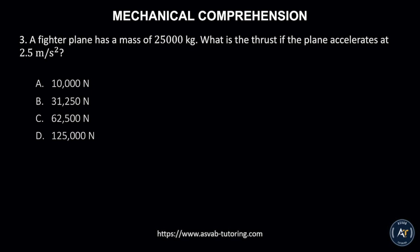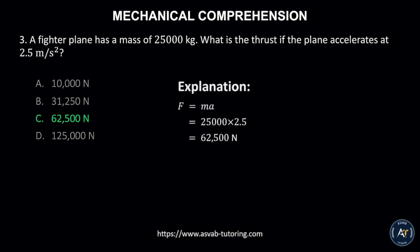Number 3. A fighter plane has a mass of 25,000 kilograms. What is the thrust if the plane accelerates at 2.5 meters per second squared? A. 10,000 newtons, B. 31,250 newtons, C. 62,500 newtons, D. 125,000 newtons. The correct answer is C. 62,500 newtons. The formula used is force equals mass times acceleration.